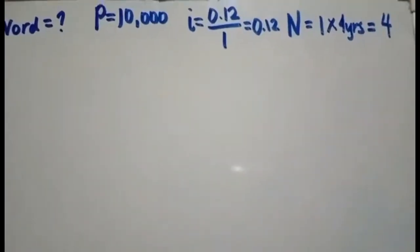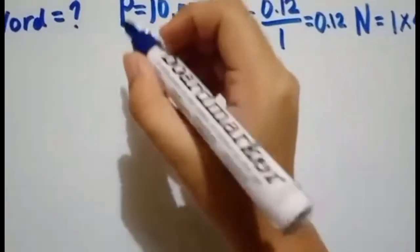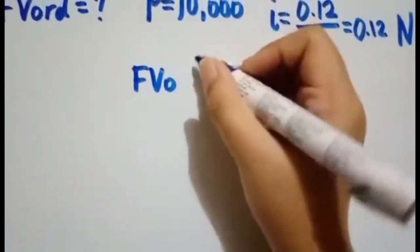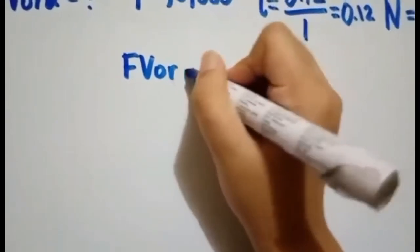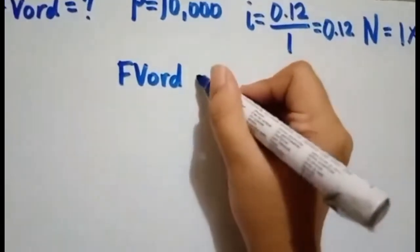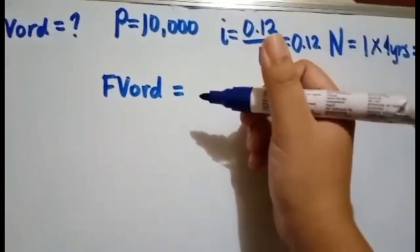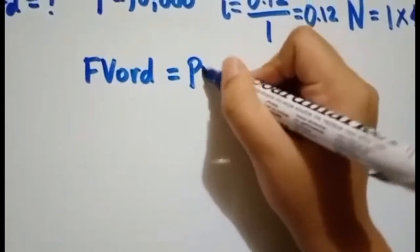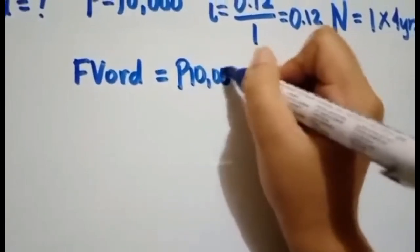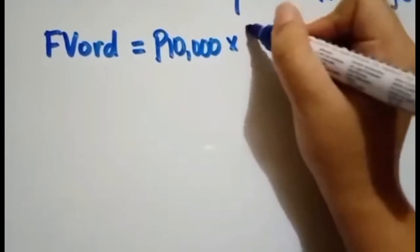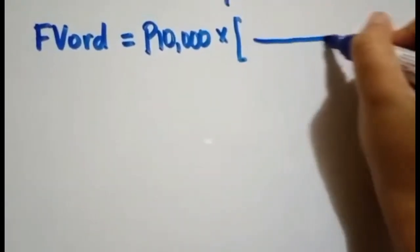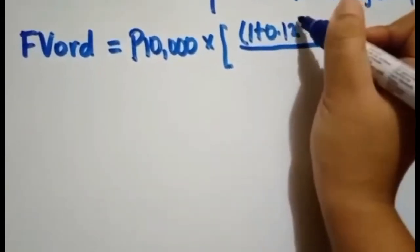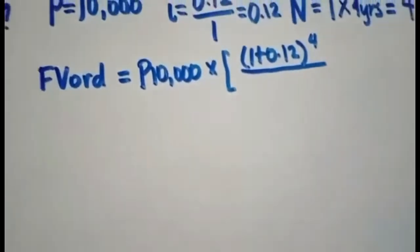You have already this given, and using these values and the formula of the simple ordinary annuity for the future value of ordinary annuity, you just substitute the formula. You have here the annuity payment, which is 10,000, and you multiply it with this. You have 1 plus 0.12 to the raise of 4, which is your n.